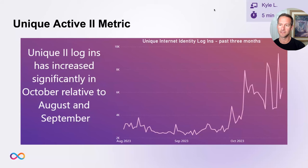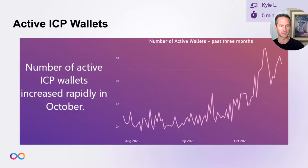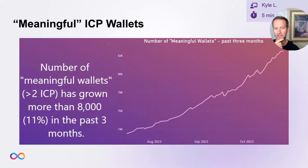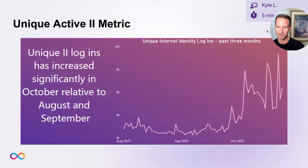I also talked recently about how there seems to be a summer doldrum — a drop in network activity last year and this year. I want to provide a little more metrics on that. What you're seeing here is unique Internet Identity logins — unique anchors on any given day. Starting in late September, we saw almost a doubling or tripling.